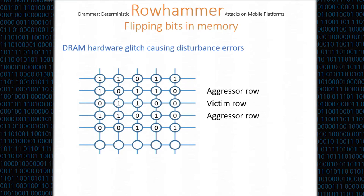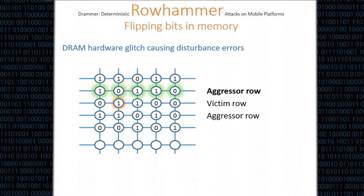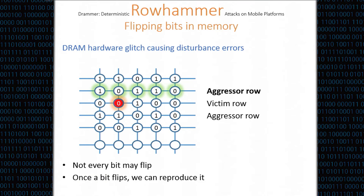Before we start, we should briefly discuss Rowhammer. Rowhammer is basically a hardware glitch in your DRAM that causes disturbance errors. Your DRAM physically will look like many rows of cells holding one bit. If you read from a row and another row — the aggressive rows — many, many times, a charge of a cell in the victim row may leak. If you do this often enough and fast enough, you can flip a bit from one to zero, or from zero to one. Not every bit may flip, but if it flips, usually we can reproduce it — store some other data in there, hammer again, and see the same bit being flipped.